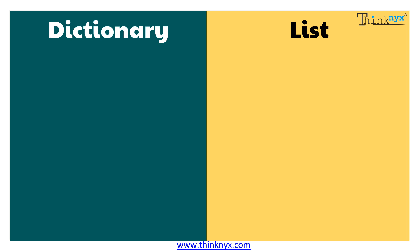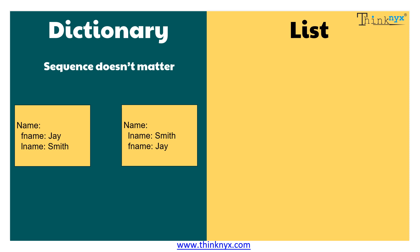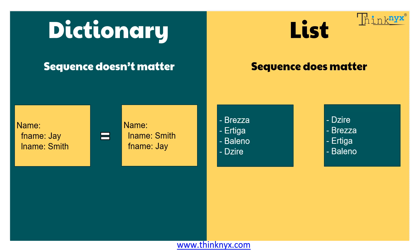There is a major difference between dictionary and list. In a dictionary, the sequence doesn't matter — it is an unordered collection of data. For example, first name and last name positions can be interchanged. Dictionaries fetch the data from their unique key, and that is why the sequence doesn't matter. Whereas for a list, the sequence should be followed. Two lists are not the same if the order of elements is different. Lists are ordered collections and we have to take care of the sequence.